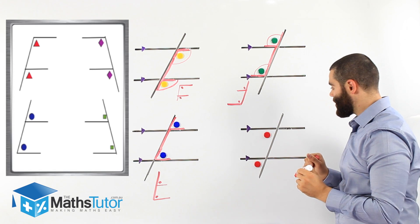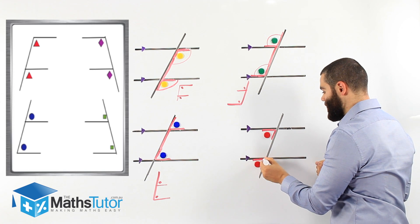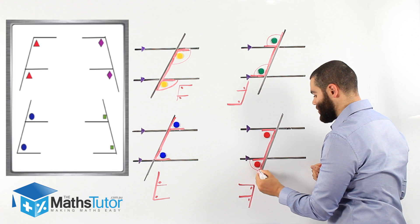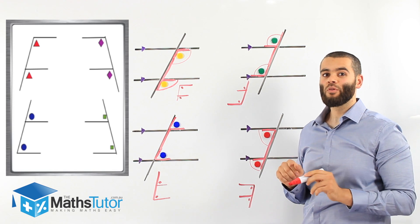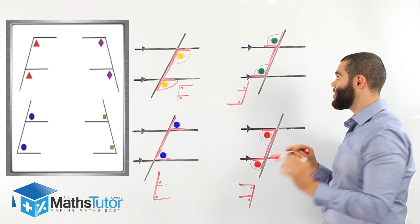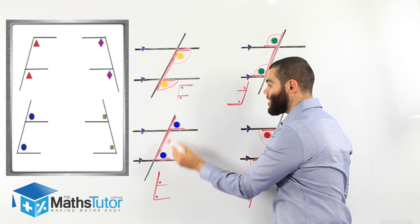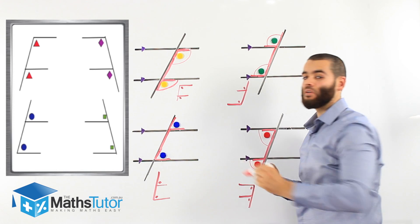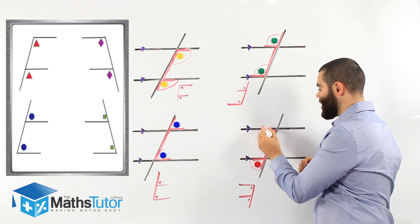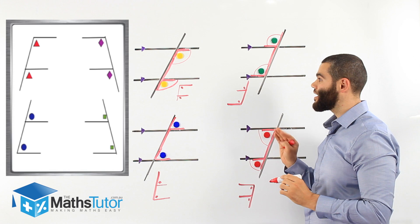Once again, we have two angles marked and we want to see if they are corresponding. We highlight this one, we highlight that one, and we join them together. We have an F back to front, and therefore this angle and this angle are corresponding. A very important note: corresponding angles are equal. So if this was 110°, this would be 110°. If this was 80°, this would be 80°. If this was 70°, this would be 70°. If this was 130°, this one would also be 130°. So we can identify corresponding angles using the highlight trick — highlight the angles, join them, and make an F-looking shape. Once we find the F, we know straight away they are corresponding angles.